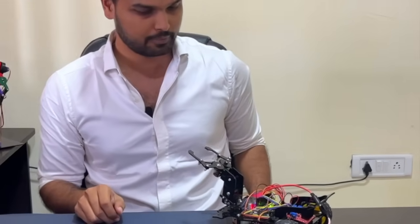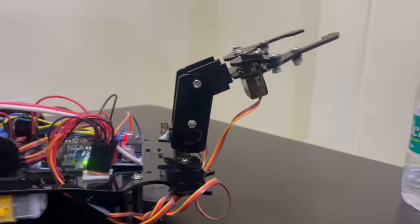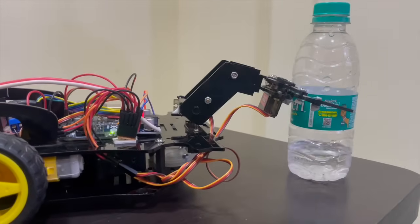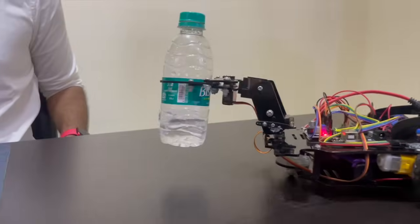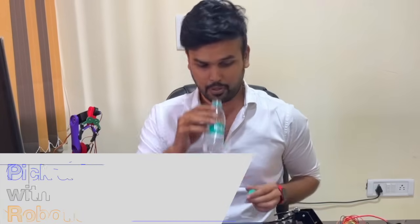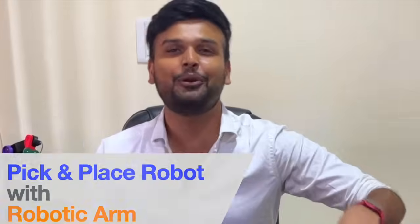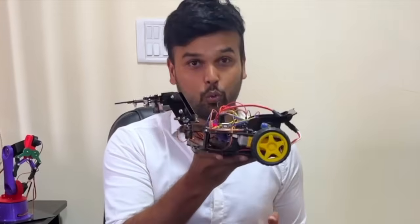Hey people, welcome back to another video of Circuit Digest. This is me Ashwin, and in this video we're going to see how to build a two-wheel robot with a robotic arm in front which can pick and place things. So let's get started.